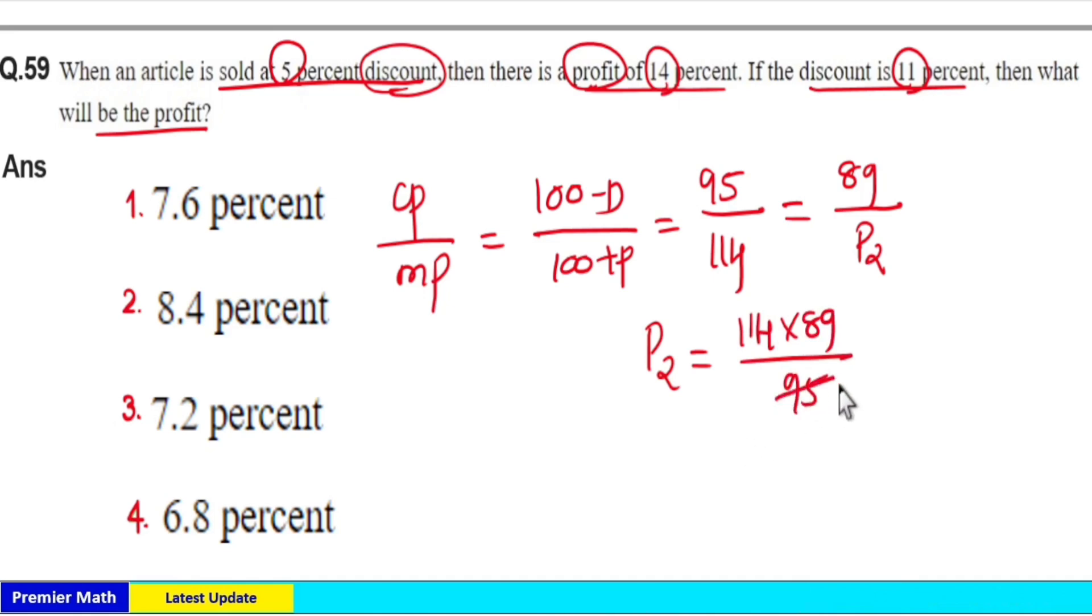20 goes 5 times in 95. So 19 goes 5 times in 95. 95 plus 19 is 114, which means 19 goes 6 times in 114. Now 5 goes 1 time in 8, remaining 3, 5 goes 7 times in 35, remaining 4, 5 goes 8 times in 40.